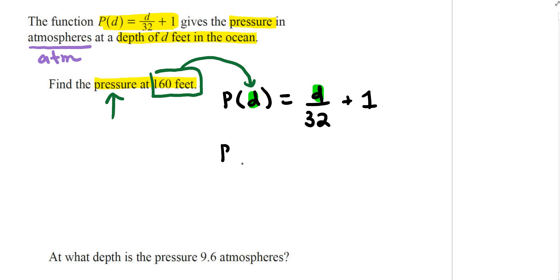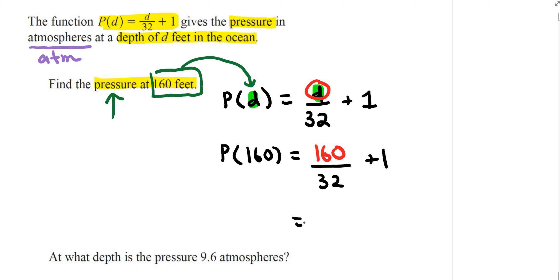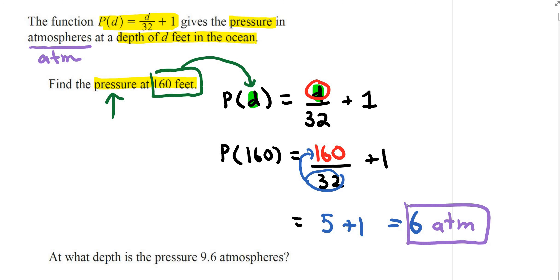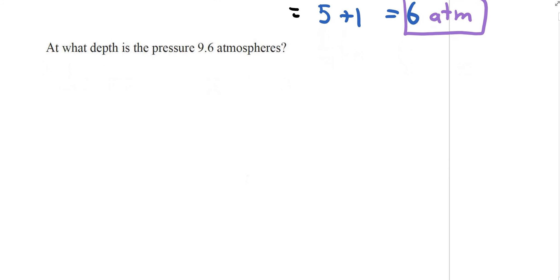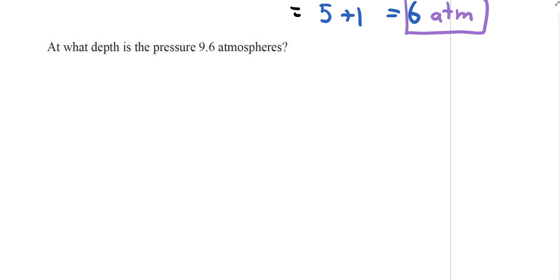The D variable is replaced with 160, so P(160) = 160/32 + 1. 160 divided by 32 equals 5, and adding 1 gives 6. The pressure is 6 ATM — six atmospheres.